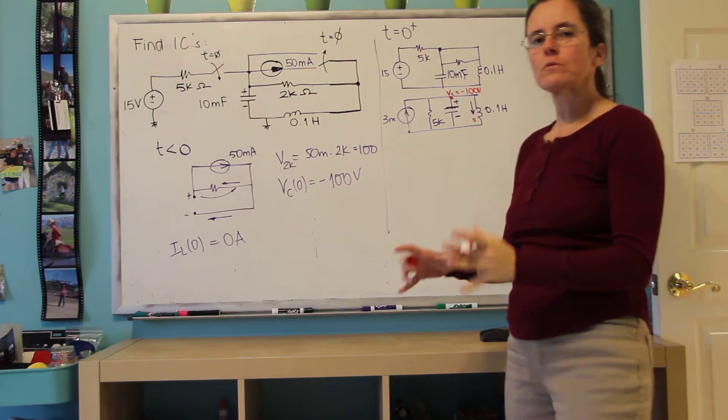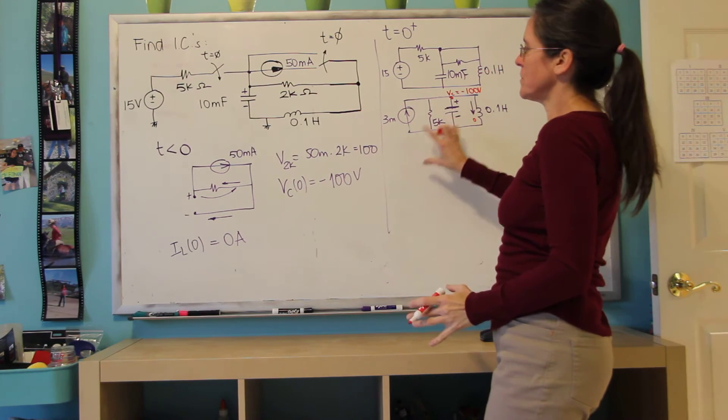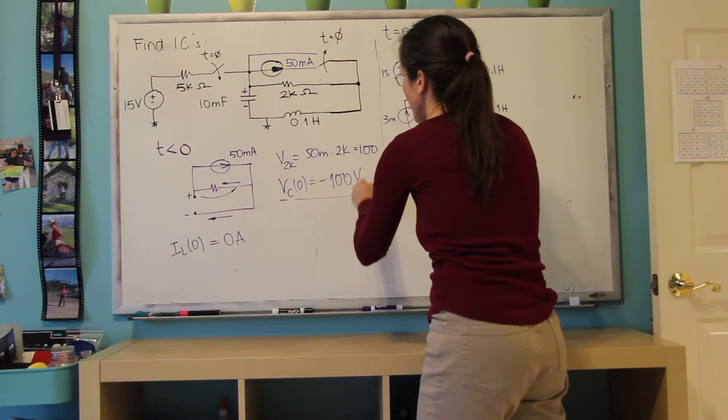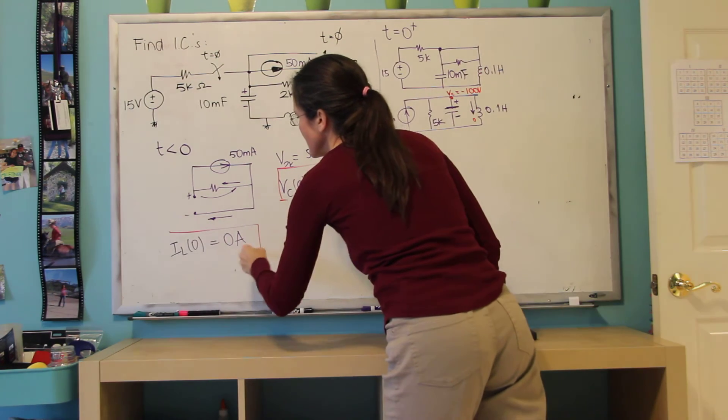And this current here is zero. So I can only use those two variables when I come to the T equals zero plus. I can only guarantee this and this.